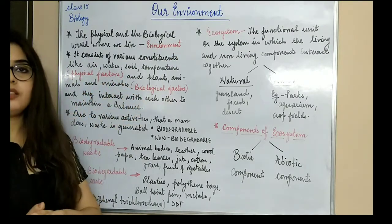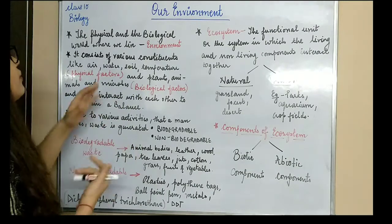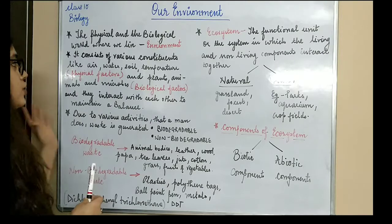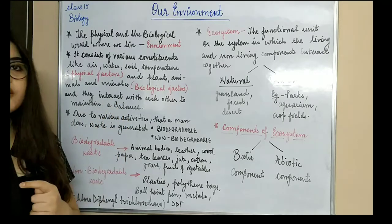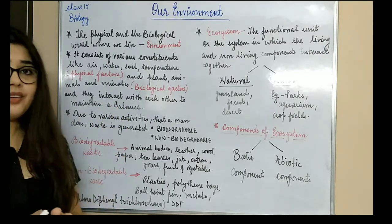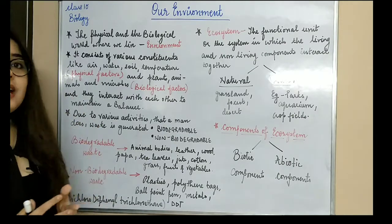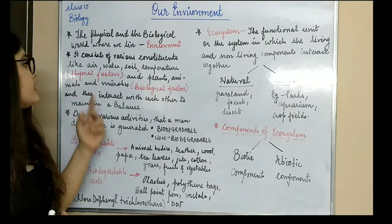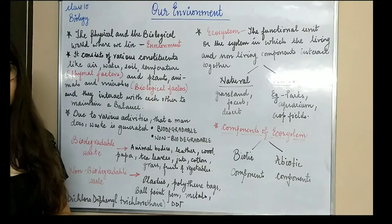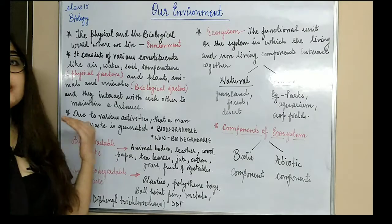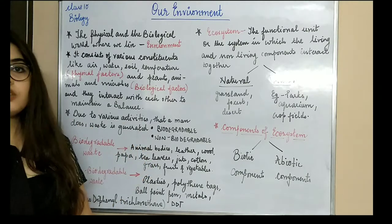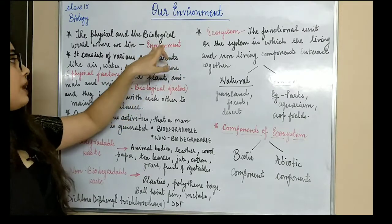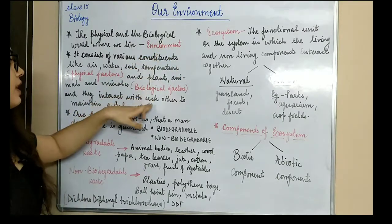When these physical and biological factors interact together, they form an environment and lead to a balance in the environment. It is very important that biological factors and physical factors interact, because due to their interaction a balance is created in nature. This is the definition of environment and these are the physical factors.